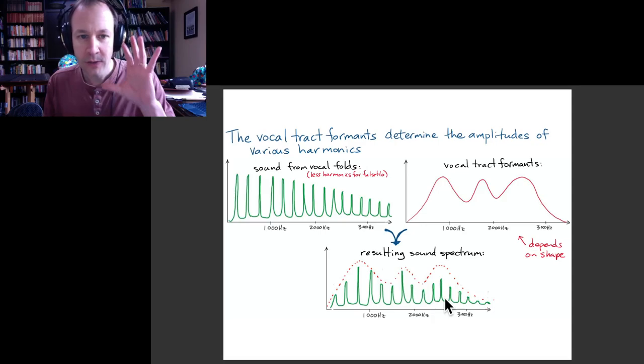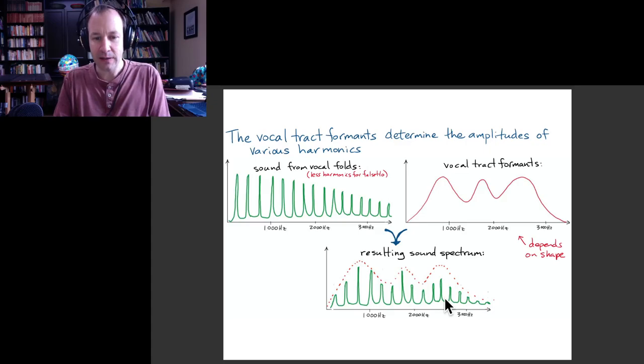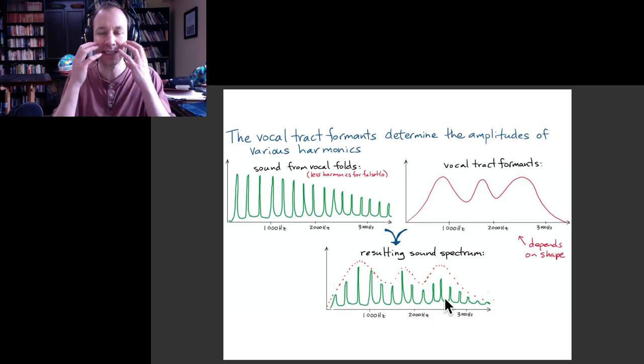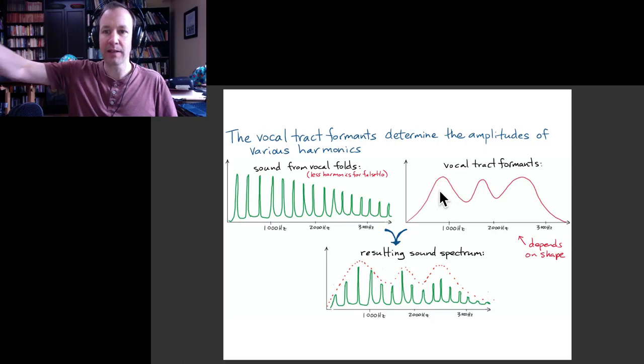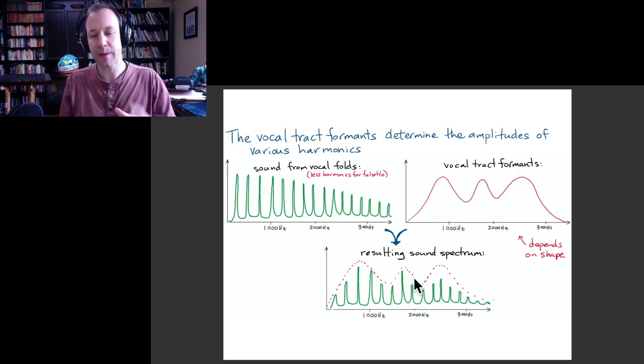So one thing that we talked about last time is that specific vowel sounds, if you say ah versus ooh versus ee, so that's clearly changing your mouth shape a lot. And those specific vowel sounds are associated with particular shapes for these vocal tract formants. So there's like a characteristic look for the spectrum when it's an ee or an ah or an ooh.